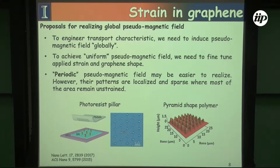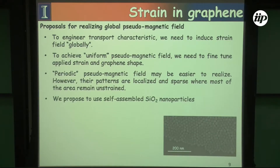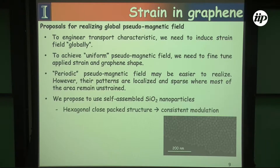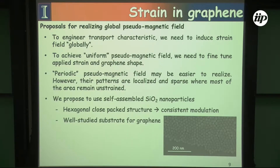In this particular experiment — and one of the things I really like about it is that even though there's a lot more work to be done on strained graphene, this is a fairly complete picture of at least one part of the story. Experimentally, what they do is use self-assembled silicon dioxide nanoparticles arranged in a hexagonally close-packed configuration, giving nearly consistent modulation. This also gives us an opportunity to study graphene on a substrate it is well acquainted with, and beyond this, we can tune the size of these nanoparticles.